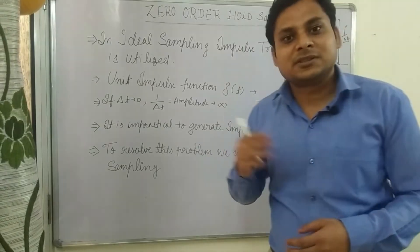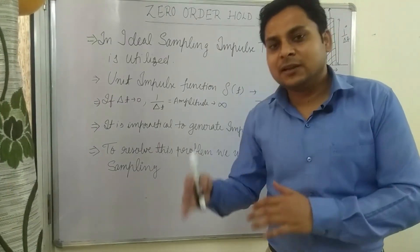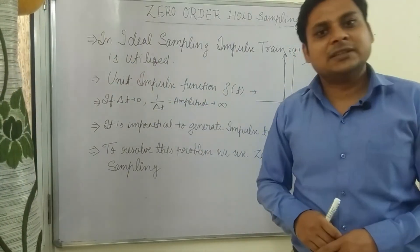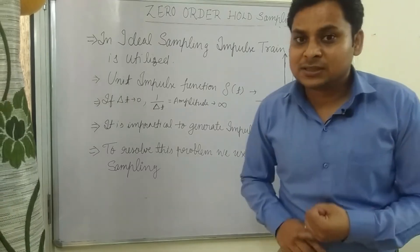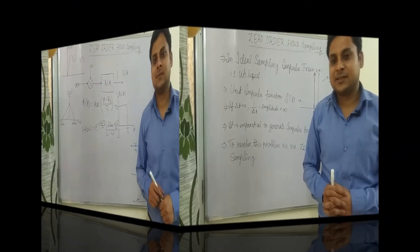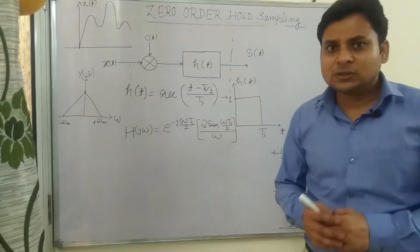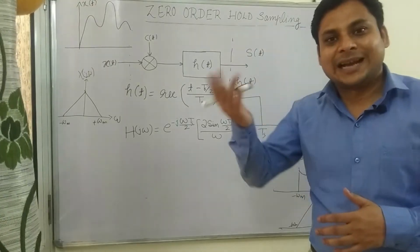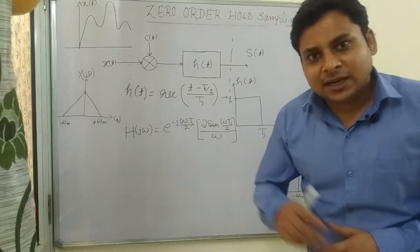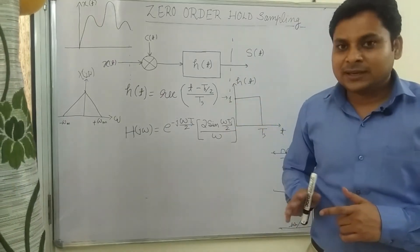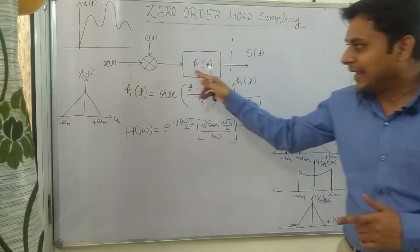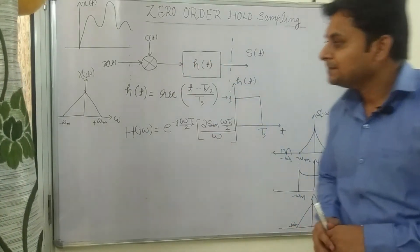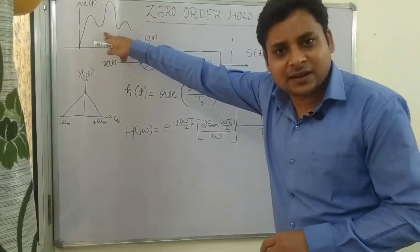The other approach is the zero-order hold sampling technique. There are many more ways, but for now we will discuss zero-order hold sampling technique. It is a practical sampling technique that converts a continuous time signal into a discrete time signal. Here is a block diagram of zero-order hold sampling to understand how it works.